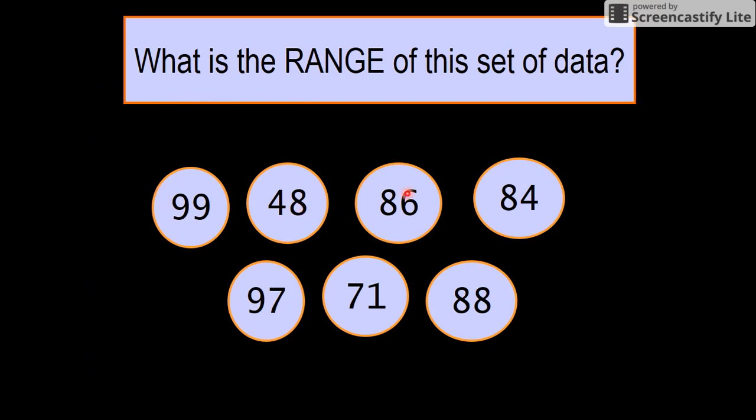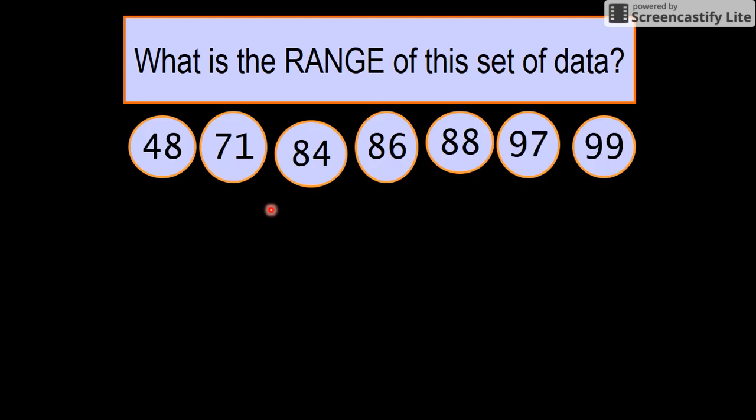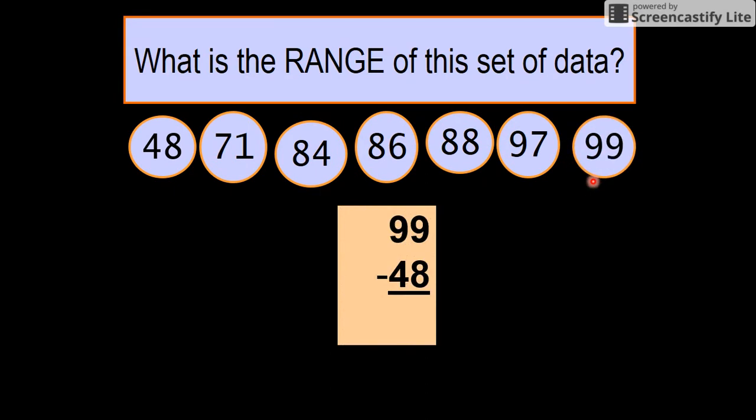What is the range in this set of data? You've got 99, 48, 86, 84. I would say 99 is your biggest, what's your smallest? 48. So I would subtract those two: 48 is the smallest, 99 is the biggest. Subtract them: 51 is your range.